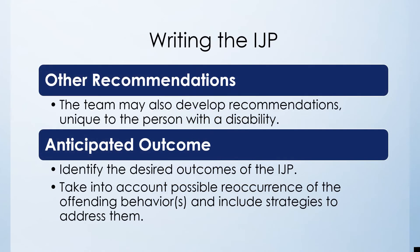The next step is to identify other recommendations that may be unique to the person, including involvement of parole and probation, a monitoring or check-in process as part of the IJP, and additional steps or supports to ensure long-term success. The team will also develop an anticipated outcome so that everybody understands what the outcome will be and the necessary steps to ensure there is not future involvement in the juvenile or criminal justice system.